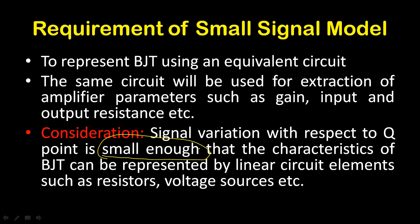But this assumption is not valid for large signal amplifiers such as power amplifiers, where the signal variation is large enough — suppose in the few volt range. If the output of a power amplifier has a large variation of signal, then of course this assumption is not valid; you cannot assume that the BJT is linear in nature — its characteristics will of course be non-linear. So this is the basic fundamental consideration behind every small signal model.